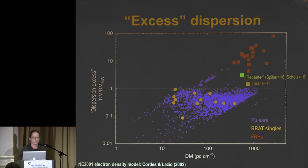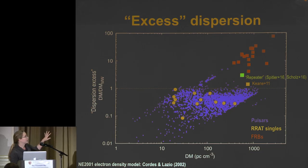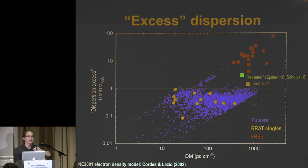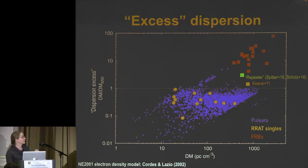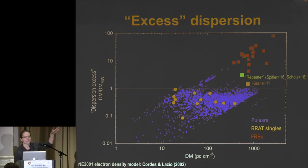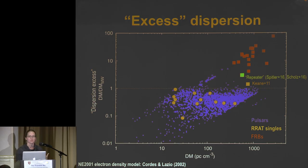How do we identify an FRB? On the y-axis I'm showing the dispersion excess — the excess beyond what we'd expect from the Milky Way. Pulsars are mostly in our galaxy, with a northern arm from the Magellanic Clouds. Fast radio bursts in red extend up to something like 70 times what you'd expect from the Milky Way contribution.